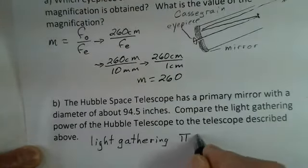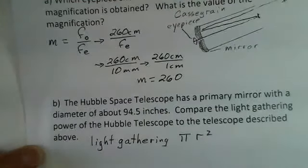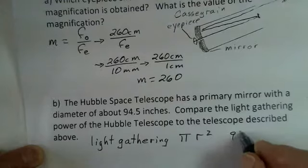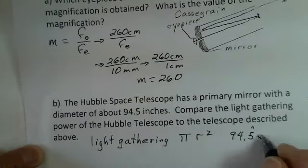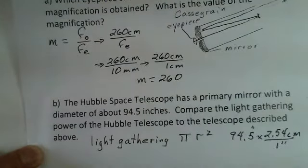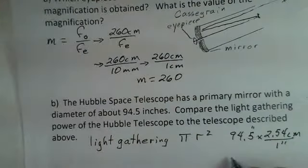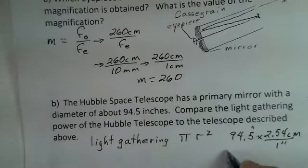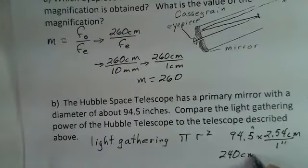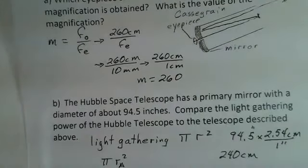Since these are circles, the area is πr². To compare the light gathering ability, we need πr² for both telescopes. Converting 94.5 inches to centimeters: 94.5 times 2.54 centimeters per inch gives 240 centimeters for the Hubble's diameter.